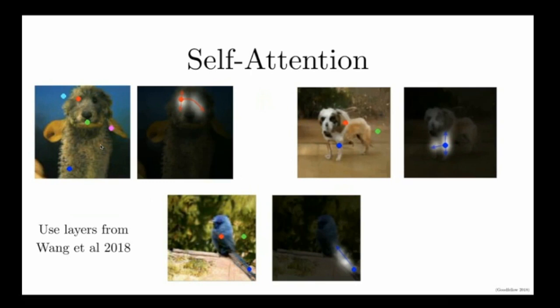Another common failure mode of generative models is that they fail to draw the legs on animals. Here we can look at the attention mechanism for the self-attention GAN, and we can see that it actually looks up and down the leg that it's drawing at any one point of the leg, to make sure that the leg successfully extends downward and separates from the body. It also glances at the other leg to make sure it's drawing the right number of legs. Mistakes like drawing too many legs or not extending the legs down far enough went away when we introduced these attention mechanisms.